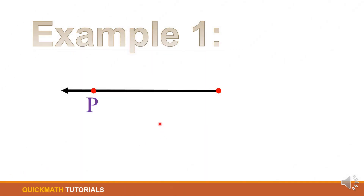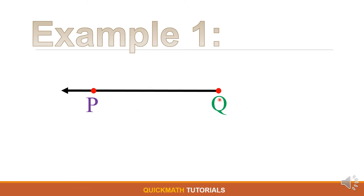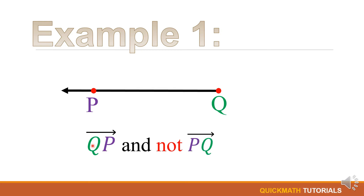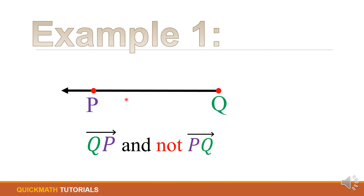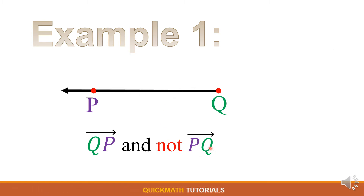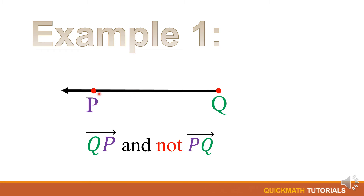Another example of a ray: we have a ray with two points P and Q. In naming this ray, we have ray QP — we start with point Q since point Q is the endpoint. We cannot name this ray as ray PQ since P is not the endpoint of this ray.